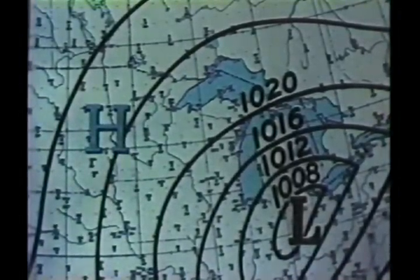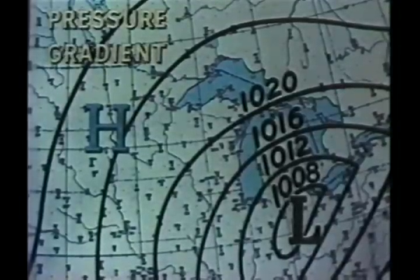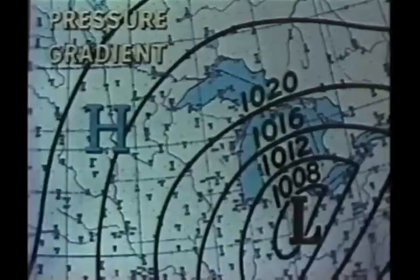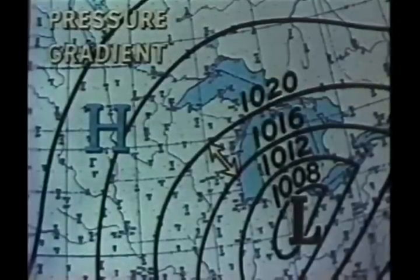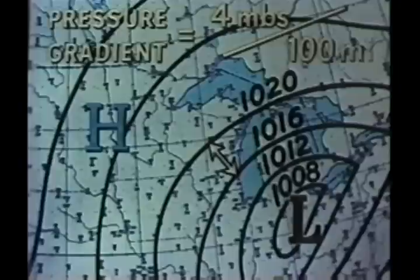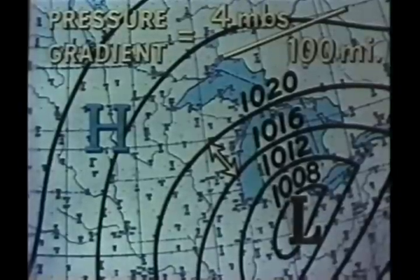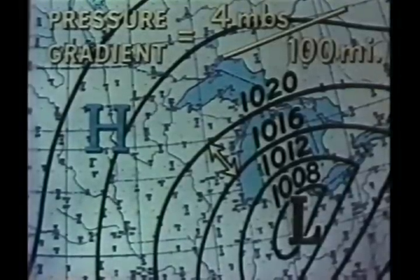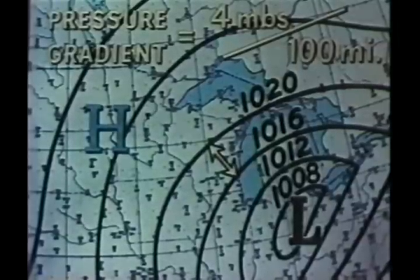The change of pressure per unit of horizontal distance is called the pressure gradient. In this area, the pressure has changed four millibars over a 100-mile distance on the horizontal plane. The pressure gradient in this area is therefore four millibars per 100 miles. More precisely, the pressure gradient is the change of pressure with distance from high to low, and perpendicular to isobars.